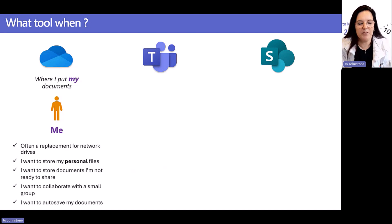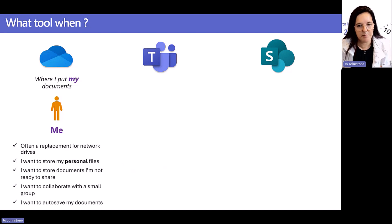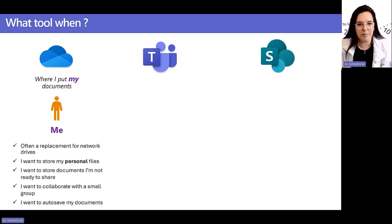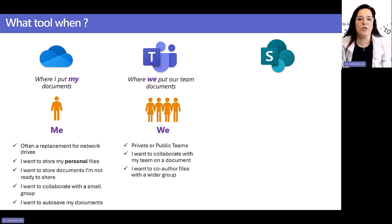Another question I get asked a lot is: what tool, when? I like to think of M365 as having three main areas where data resides: OneDrive, Teams, and SharePoint - and I break these up into Me, We, and All. The 'Me' area is my personal space - where I put personal files, maybe first drafts of things before I'm ready to share them. I might collaborate here with a small number of people, like sharing my development plan with my manager.